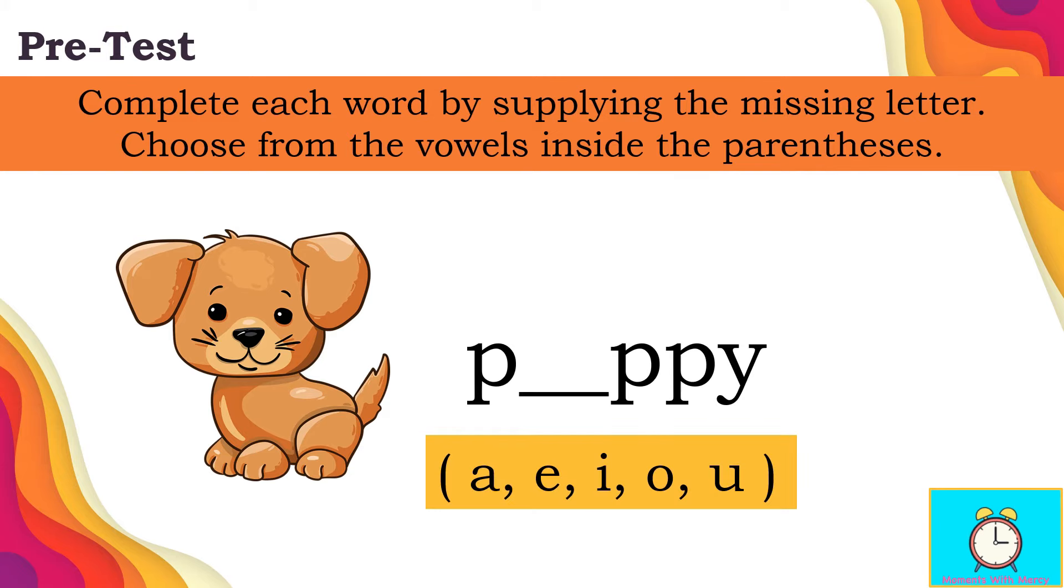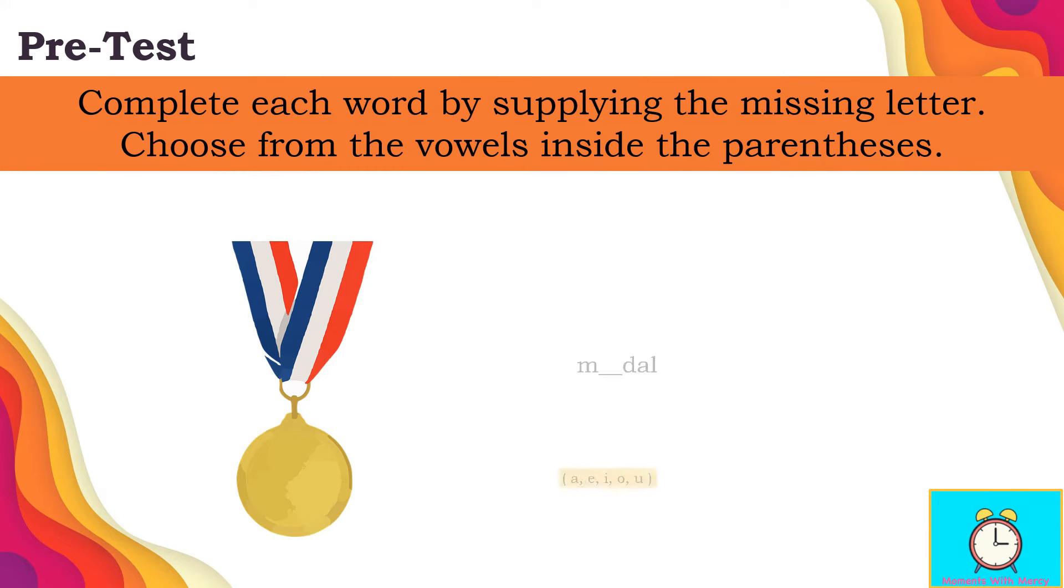Next picture. Type now your answer. What do you think is the answer? If your answer is U, you are right. Letter U is the missing letter for the word puppy.